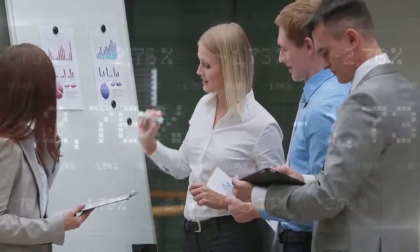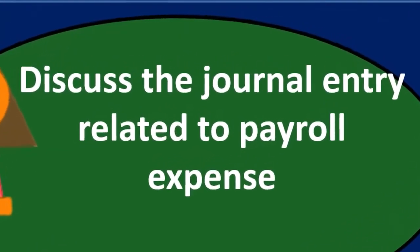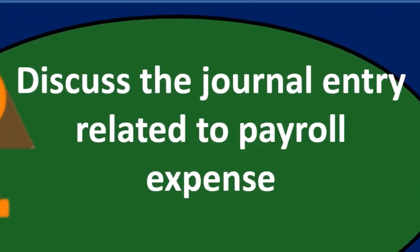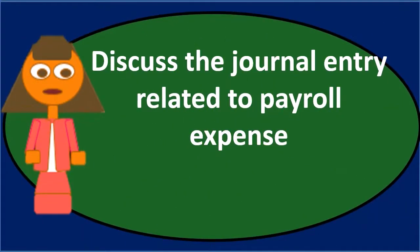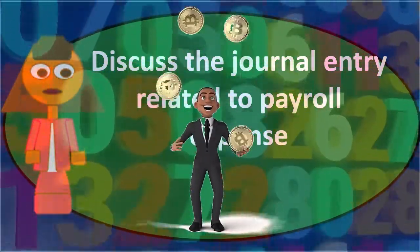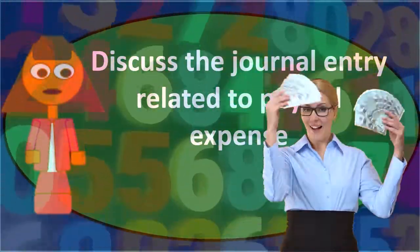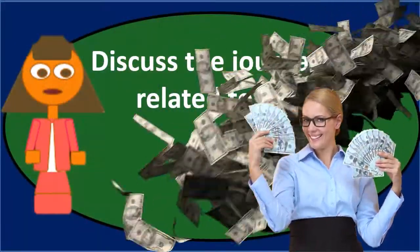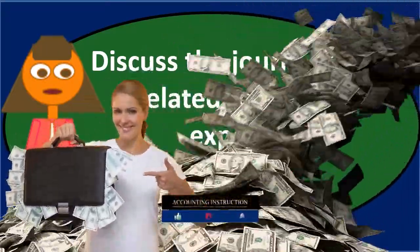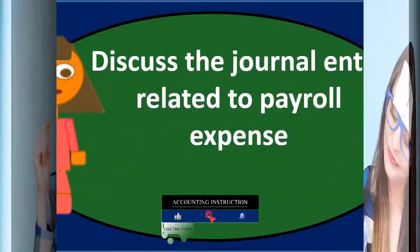When we construct the journal entry, we start with gross earnings — what employees actually earned. Just like a simple journal entry, we debit payroll expense for the total gross earnings from the register. We'll credit cash or a payroll liability depending on whether we're paying at the point of processing. I'll use cash for now to keep it similar to a normal journal entry, and we'll determine the amounts as we build the entry.